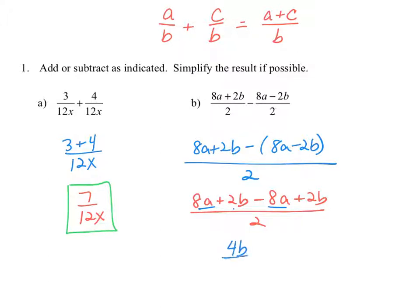We know that 8a minus 8a gives us 0, and 2b plus 2b is 4b. So we have 4b in the numerator divided by 2, but this can be simplified further by dividing out a 2 from both the numerator and the denominator. So 4b divided by 2 is equal to 2b. That's our final answer when subtracting those two rational expressions.